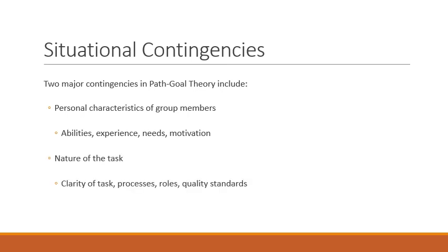The second contingency is the nature of the task. This includes the extent to which tasks are defined, the processes are well proven, the employees' roles are defined, and quality standards have been set to measure performance. For example, if the task is new and unclear, the followers are likely to waste their efforts due to a lack of knowledge and experience.